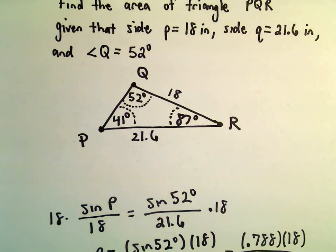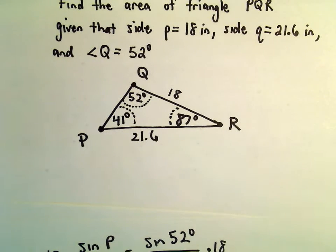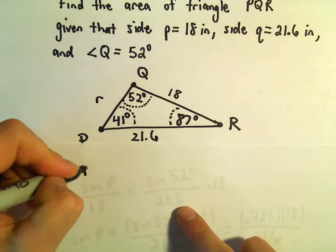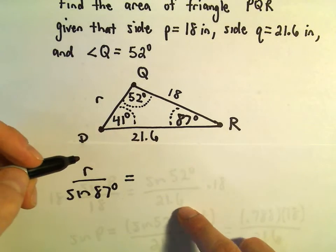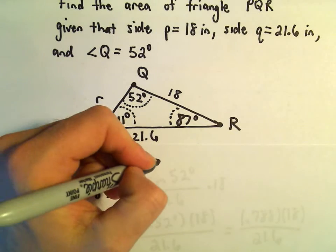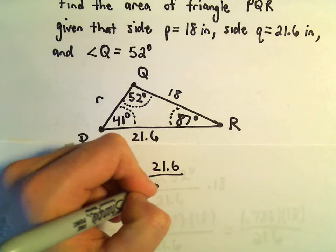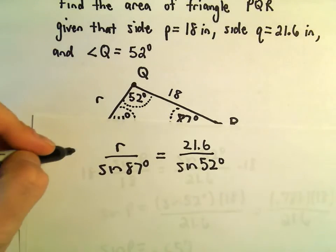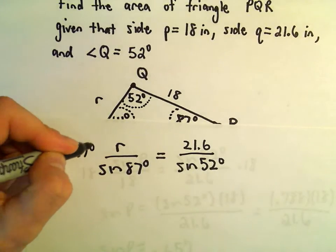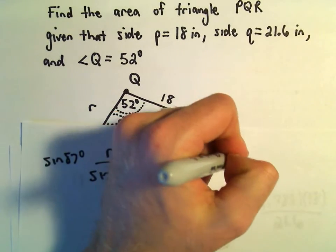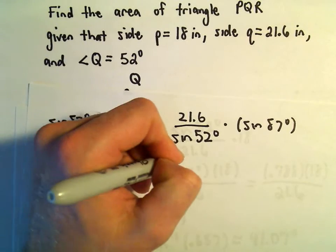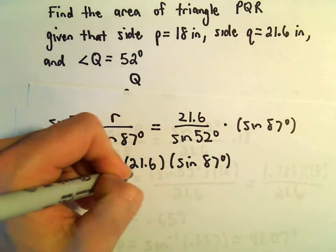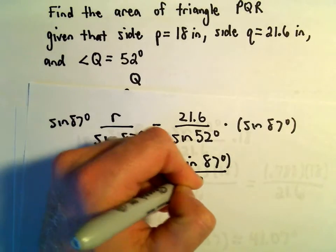So now really angle R here is 87 degrees, so definitely not to scale here. And now I'm going to use the law of sines again to figure out this side length. So again, maybe we'll call this little r. So the side length little r over sine of 87 degrees, that's going to equal 21.6 over sine of 52 degrees. Now we can just multiply both sides by sine of 87 degrees.